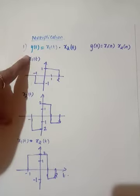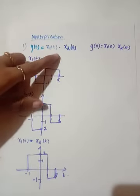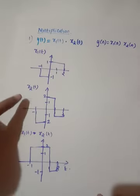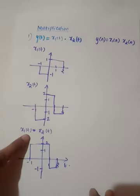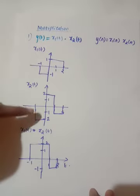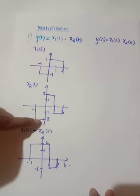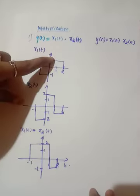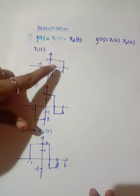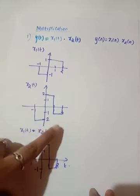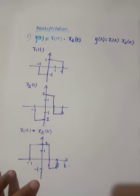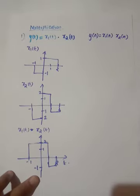Now consider multiplication: y(t) = x1(t) · x2(t). Multiplying the signals — minus 1 times minus 2 equals 2, so I have plotted 2. In the range where values are 1 and 2, the product is 2. In the range 1 to 2, it is 1, and where one value is minus 1, the product is minus 1. This is what x1(t) · x2(t) gives. A similar operation can be done for discrete time.